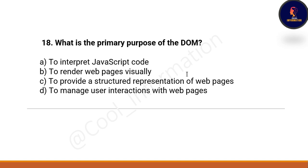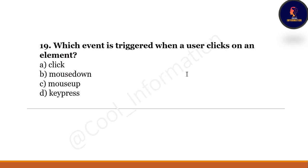Next question: What is the primary purpose of the DOM? Option A: to interpret JavaScript code. Option B: to render web pages visually. Option C: to provide a structured representation of web pages. Option D: to manage user interaction with web pages. The correct option is C. Next question: Which event is triggered when a user clicks on an element? The correct option is A — the click event.